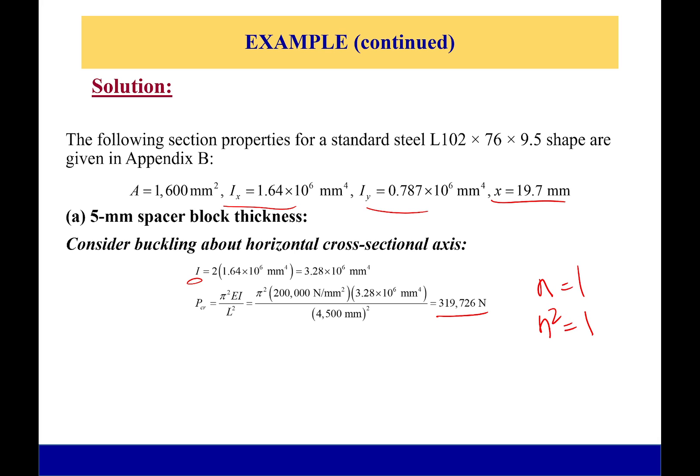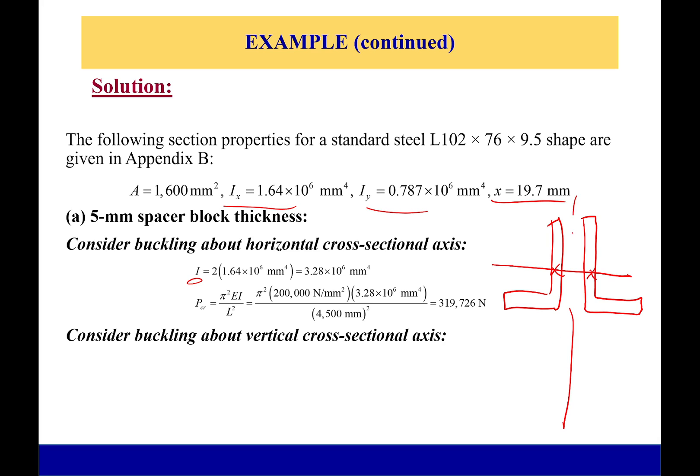Okay, now what if we buckle around the vertical cross-sectional axis? So this is where things get a bit different and we have to care about our spacer block. Remember, when I have that vertical axis, before I was saying that was buckling around the x-axis which meant that this was going perfectly through the centroid of both these members. I didn't have to use the parallel axis theorem to worry about anything – it was great. But as soon as I go through the vertical axis right here, I'm no longer going through their centroid. I'm going to have to use the parallel axis theorem to correct the moment of inertia.